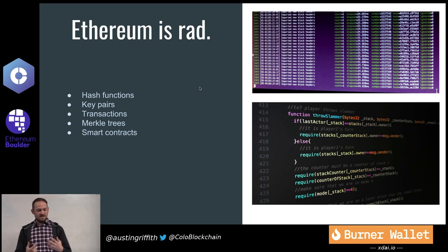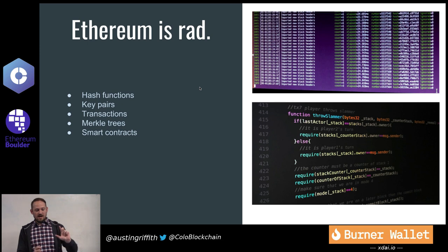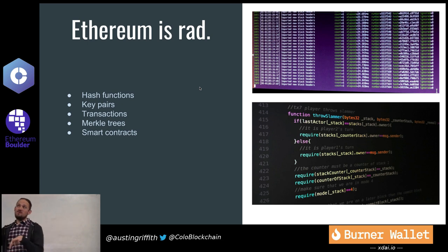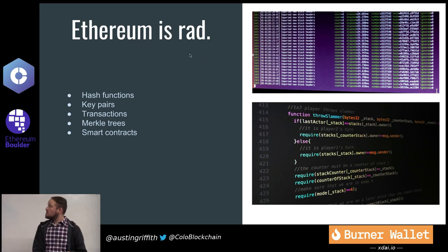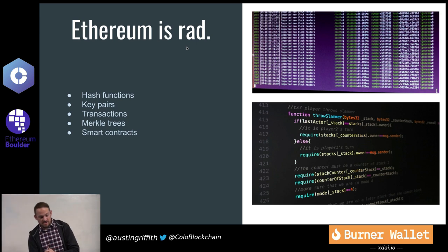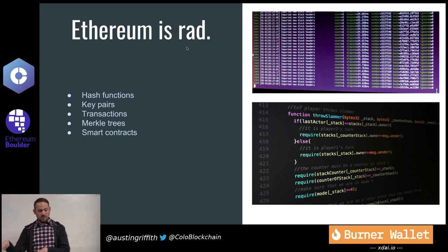A key pair is when you have a private and a public key. The public key is derived from the private key, and the private key can be used to sign things such that someone given your public key could prove that you signed it. Transactions are basically just a 'to', 'from', and 'amount', and then you sign it with your key pair so you can tell who it came from.